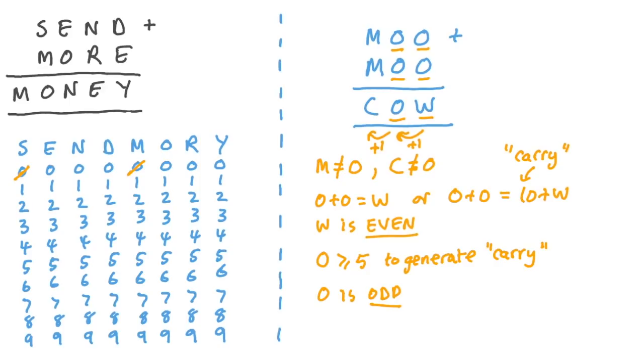Well, 0 plus 0 plus 1 is not equal to 0. 1 plus 1 plus 1 is not equal to 1. 2 plus 2 plus 1 is not equal to 2. But 9 plus 9 plus 1 is equal to 19. So o must be 9. And we can replace all the o's with 9s.